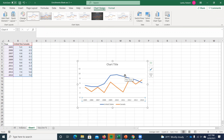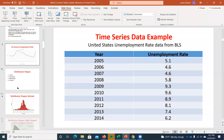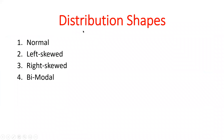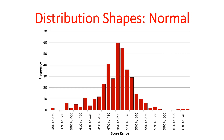That covers what we need in Excel for now. Moving to the next topic: when we think about frequency distributions with enough bins, we can draw a line connecting the tops of the bars and approximate a continuous distribution. We'll discuss four main types of distributions.